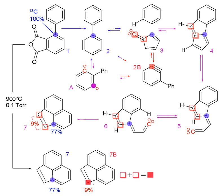An isotopic tracer, also called an isotopic marker or isotopic label, is used in chemistry and biochemistry to help understand chemical reactions and interactions. In this technique, one or more atoms of the molecule of interest is substituted for an atom of the same chemical element but of a different isotope, like a radioactive isotope used in radioactive tracing.